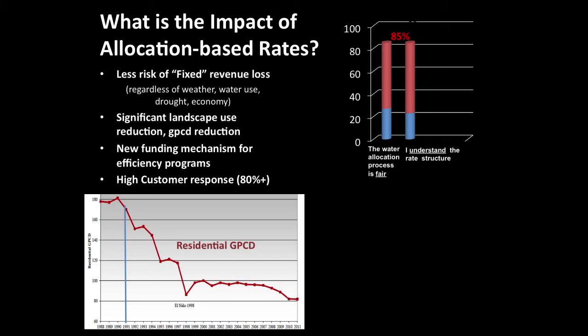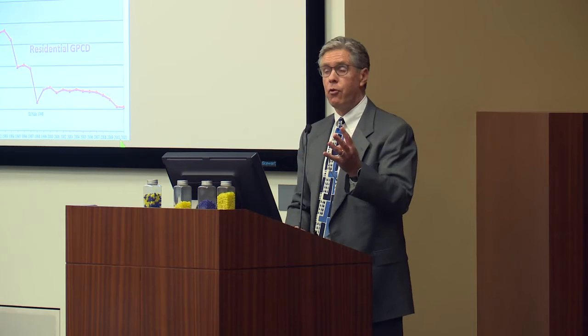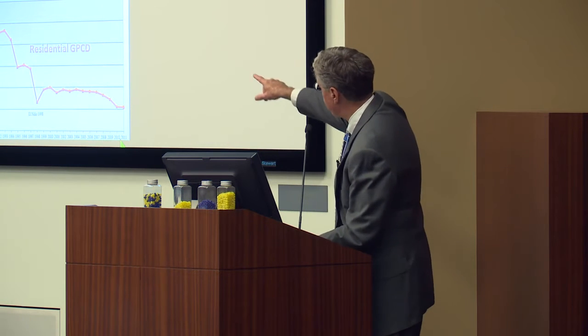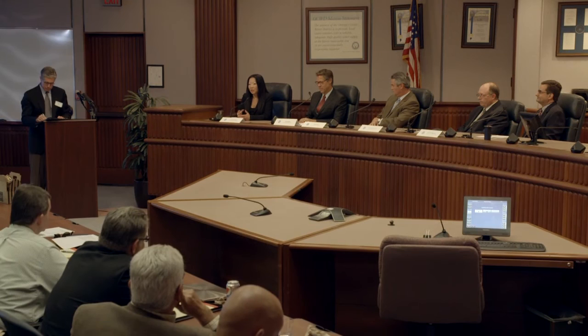At that same agency, the blue line marks where they implemented allocation-based rates — remember, there had been almost four years of drought prior to that. You can see where the residential GPCD was before implementing the rates. That was stunning — three or four years of drought hadn't achieved what allocation-based rates did. What it really took was a level of commitment from the board of directors, looking each other in the eye and embracing a change in attitudes towards their business dealings.